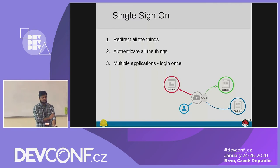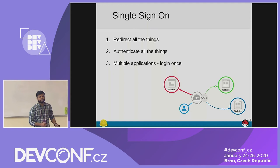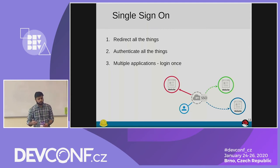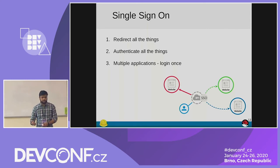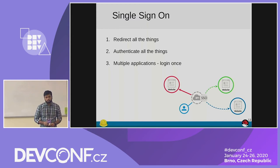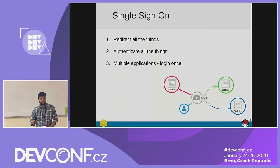What single sign-on does is it redirects everything. That means you have your application, it will redirect you to the OpenID provider and it will authenticate your application. The main purpose behind this is that you can have multiple applications with a single login using the same set of credentials — the same usernames and passwords.